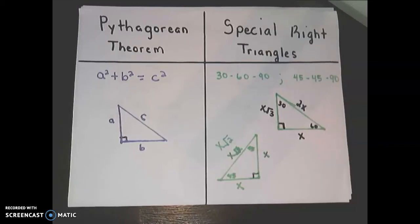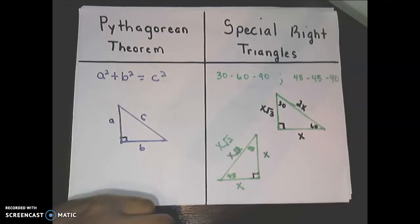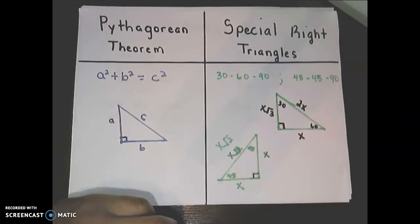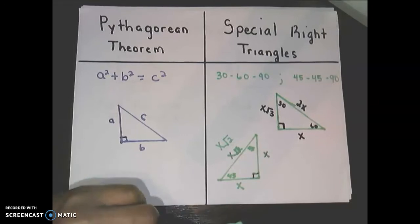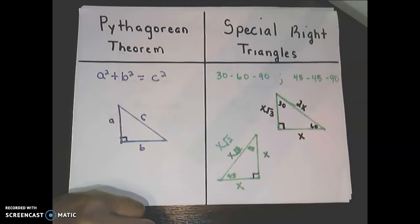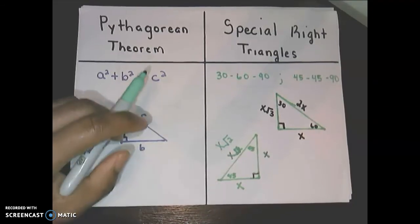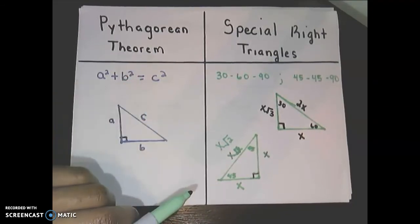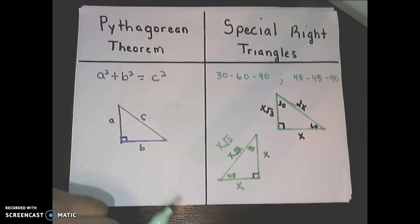Hello everyone, back again with another video. For this week's lesson, this is another recap of something we've already learned. Today we're going to be talking about triangles — right triangles. Last week we talked about trig ratios using right triangles: sine, cosine, and tangent. But today we're going to talk about the Pythagorean theorem and special right triangles.